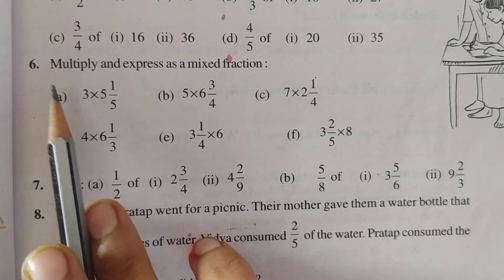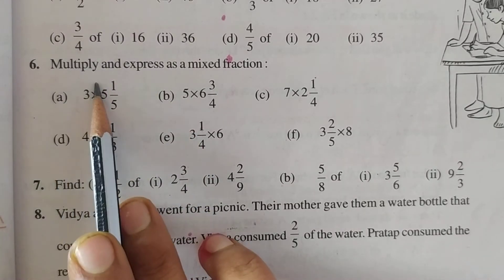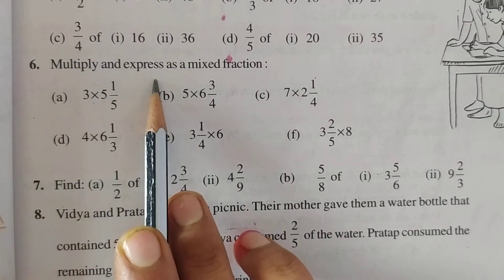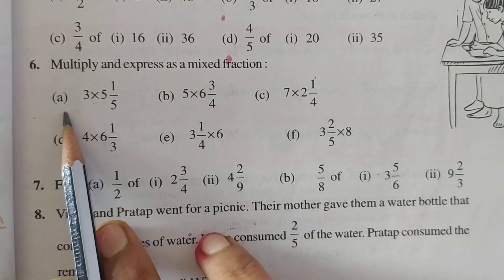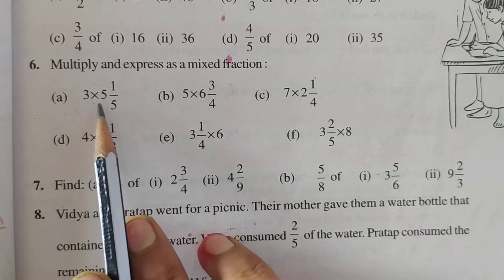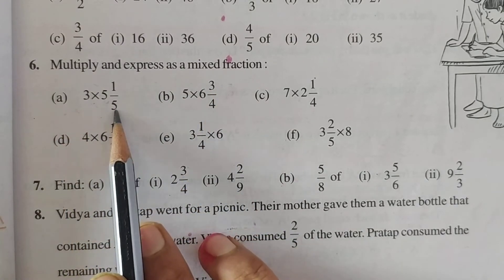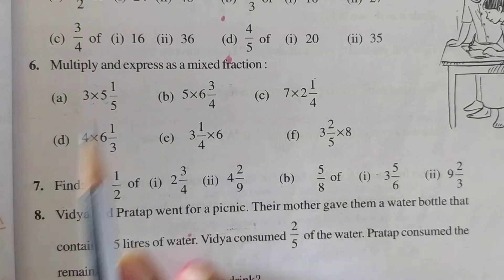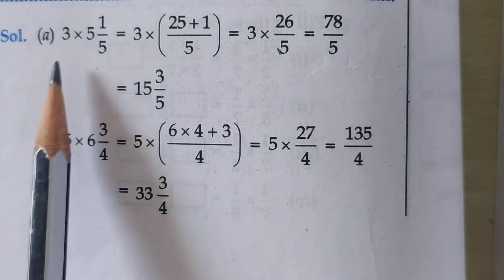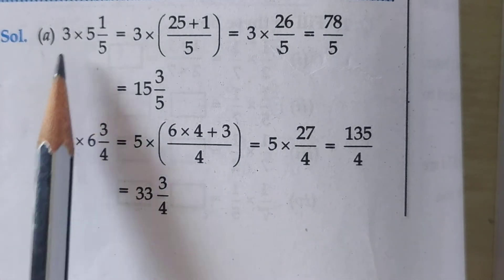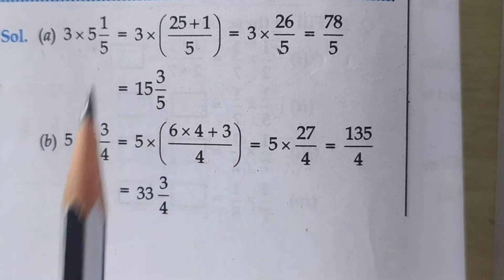Now students, question 6: Multiply and express as a mixed fraction. First, part (a): 3 multiplied by 5 whole 1 upon 5. Let us solve this.